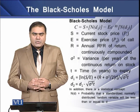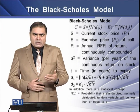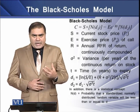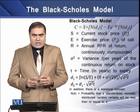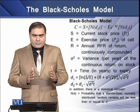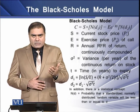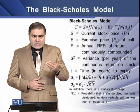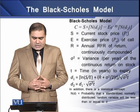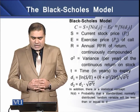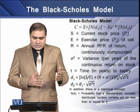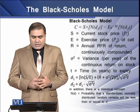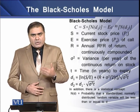We also have two other variables: D1, also called delta, and D2. Additionally, there is a statistical variable N(D), which states the probability that a standardized normally distributed random variable will be less than or equal to D.